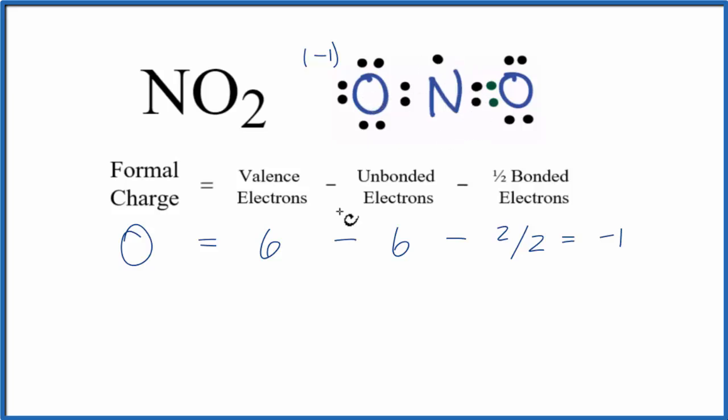Next, we'll do the nitrogen. Nitrogen, group 15, sometimes called 5A, five valence electrons. Unbonded, we only have the one valence electron here that's not involved in a chemical bond. So we have one of those.